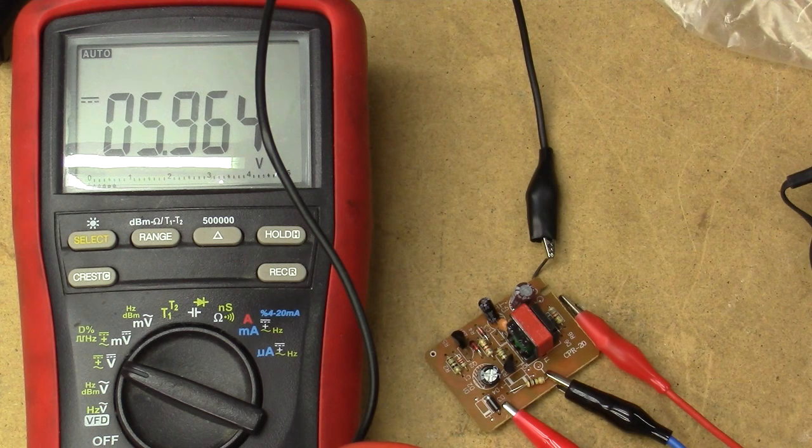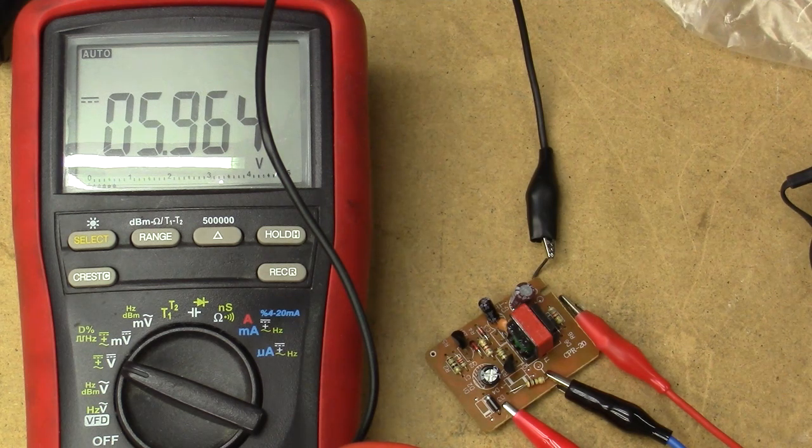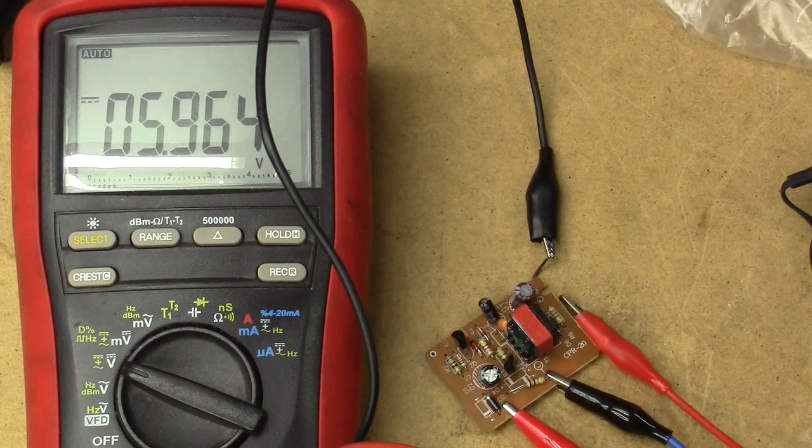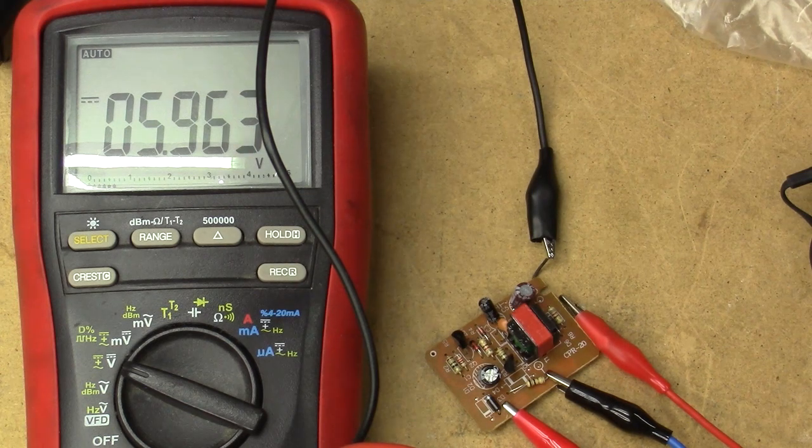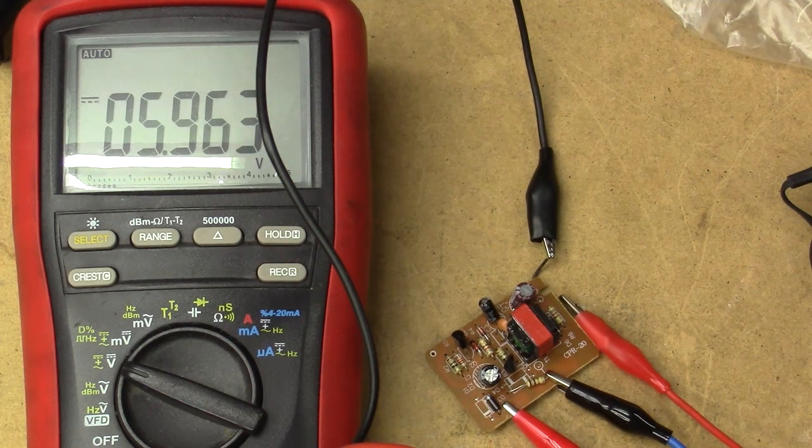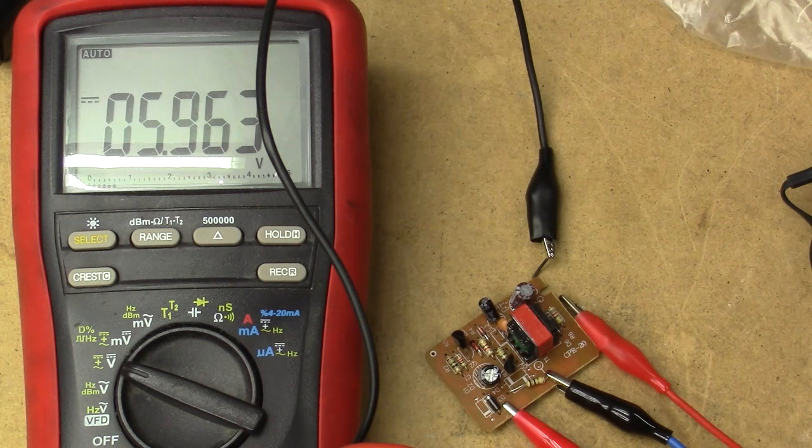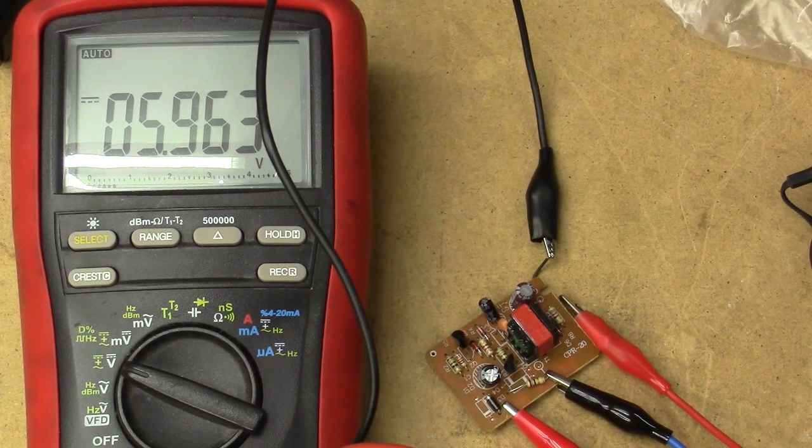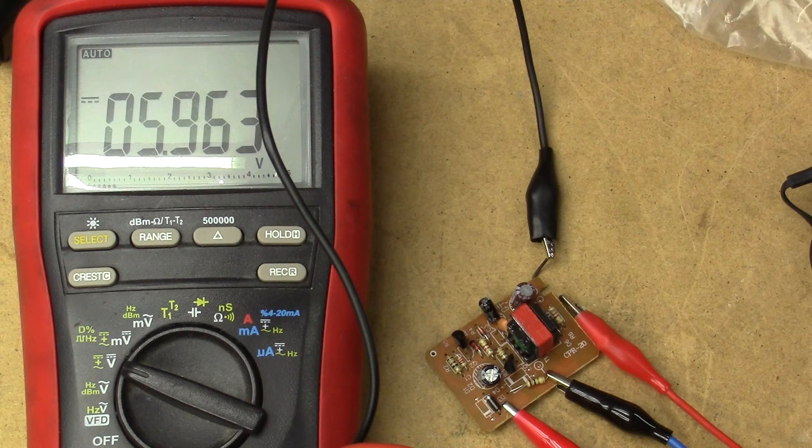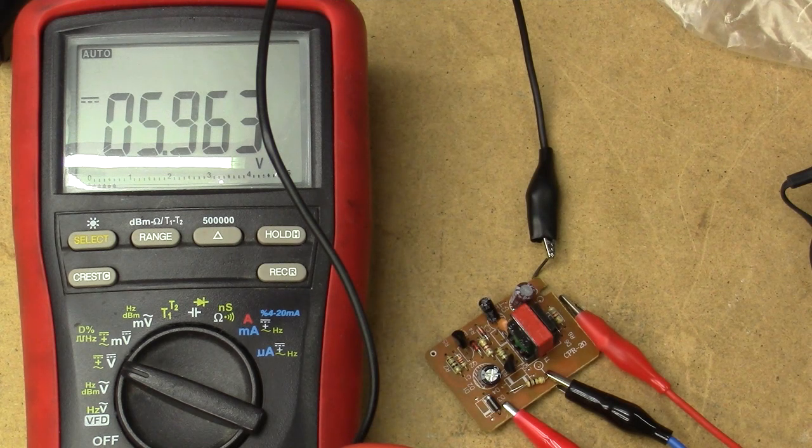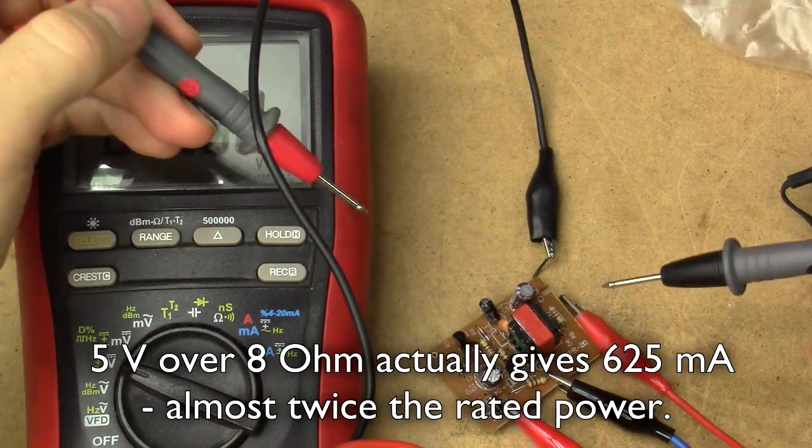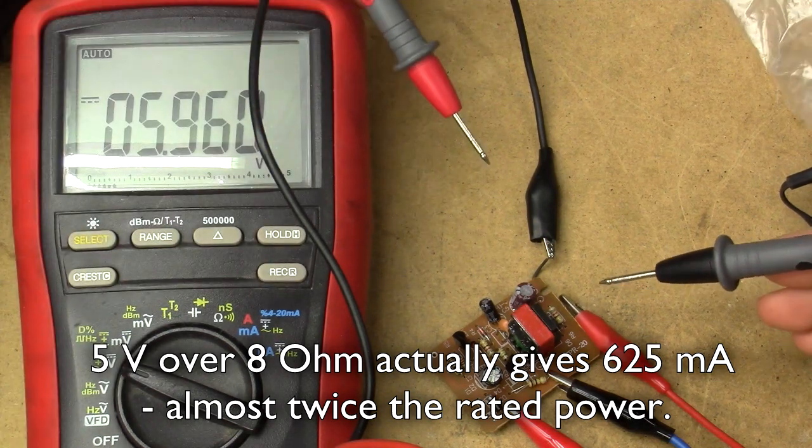Almost 6 volts. Well, at least it's working, drawing the same 10 milliamps. So let's just see what happens if we put an 8 ohm resistive load on it. It should be just pushing it to its rated power, maybe slightly above. Well, I suppose it's current limiting.